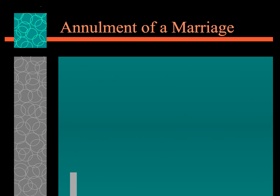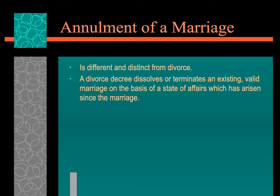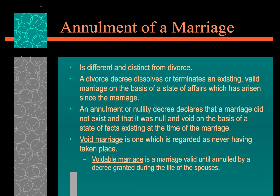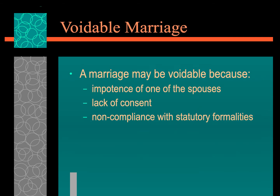An annulment is different from a divorce. An annulment is a decree that states a marriage did not exist and that it was null and void. A void marriage is one regarded as though the marriage never actually took place. A voidable marriage may arise because of impotence, a lack of consent from one side, or non-compliance with the required statutory formalities upon registration of the attempted marriage — that is, the wedding registry.